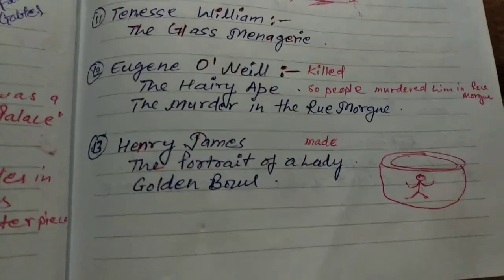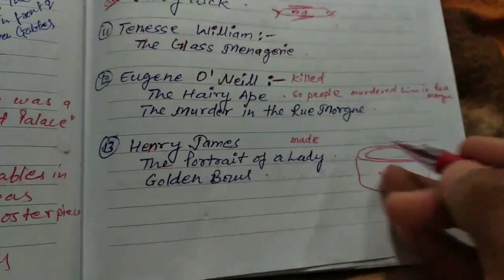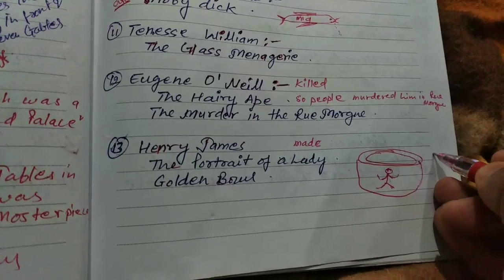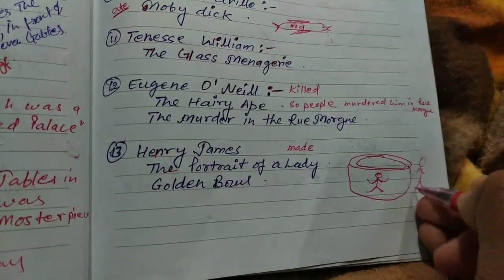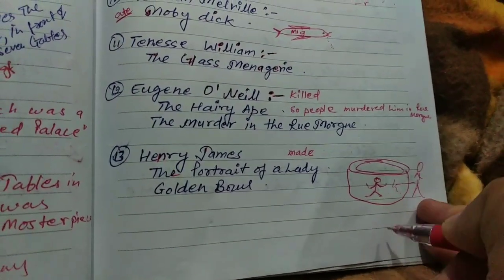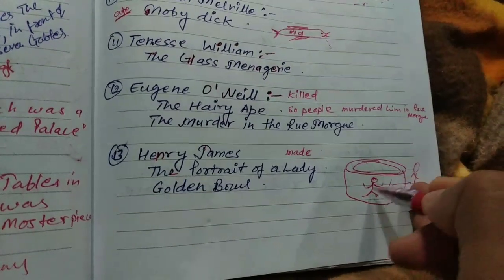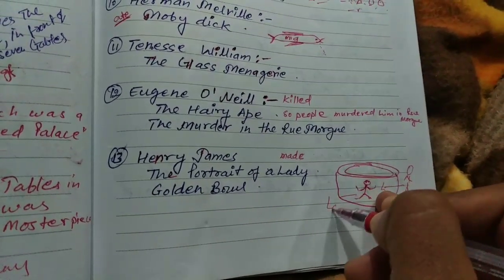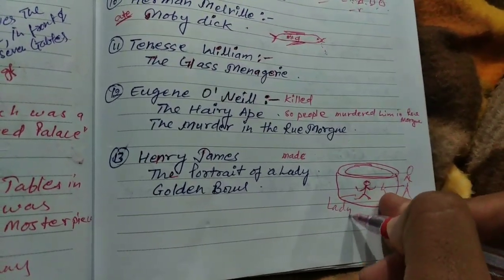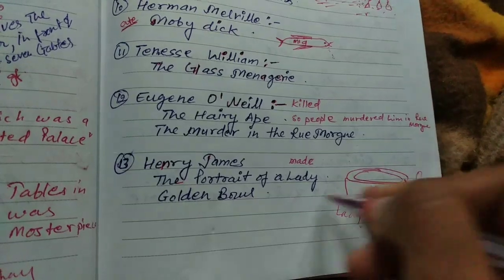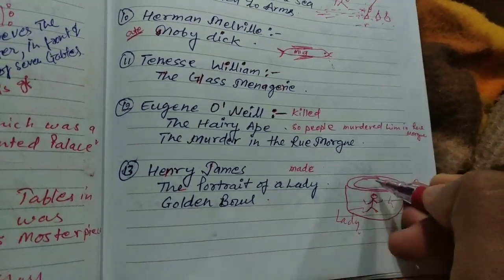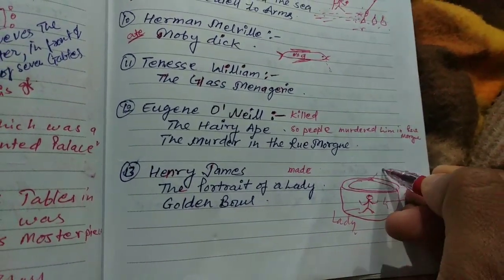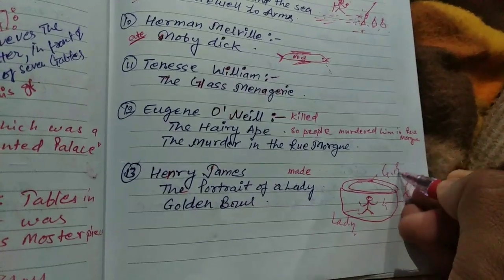Next shortcut is Henry James. Just try to picture this one — he was making a portrait of a lady. So she is a lady, and he is making the portrait of a lady on a golden bowl. This is a golden bowl.